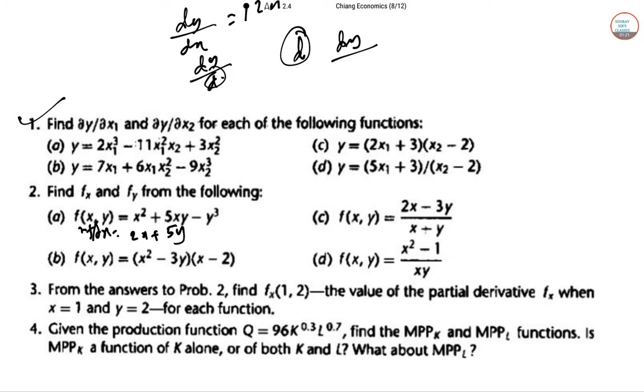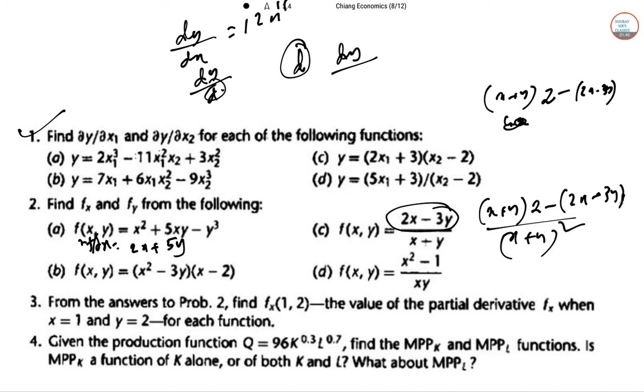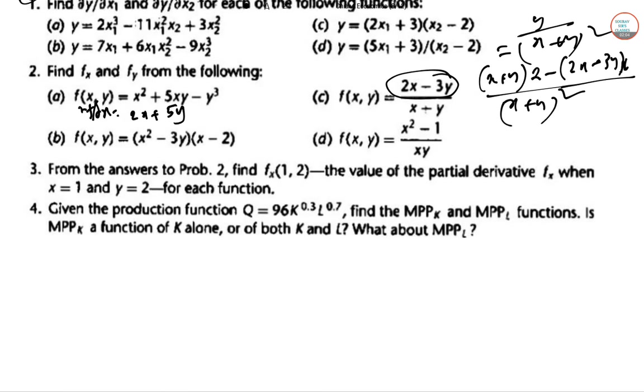So denominator and numerator we can do it separately. This denominator type will be denominator squared. This will be a basic structure here. This derivative of the numerator, so with respect to x obviously 2, minus numerator, derivative of the denominator, that is 1. So we can reach to this: minus 2x plus 2x, 2y minus 3y, so y by x plus y whole square.